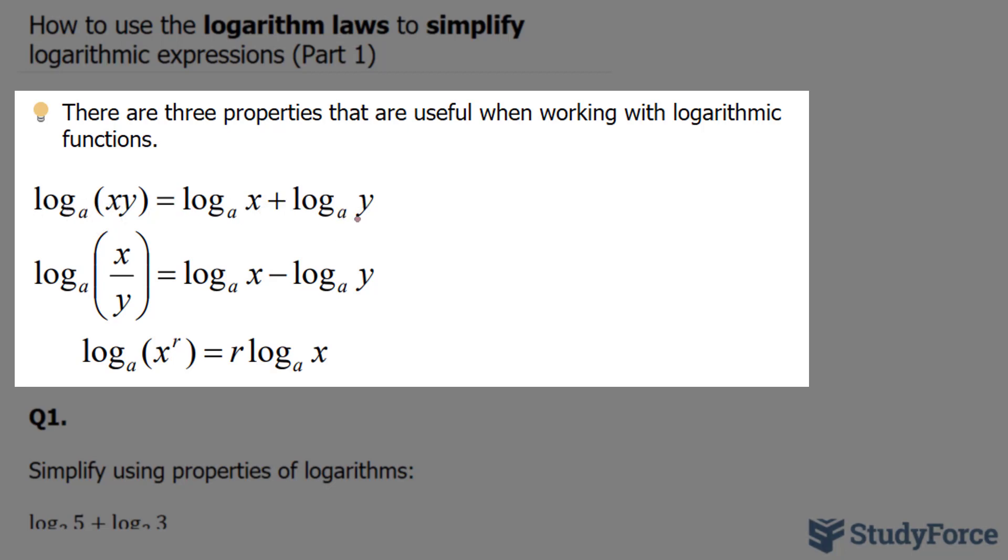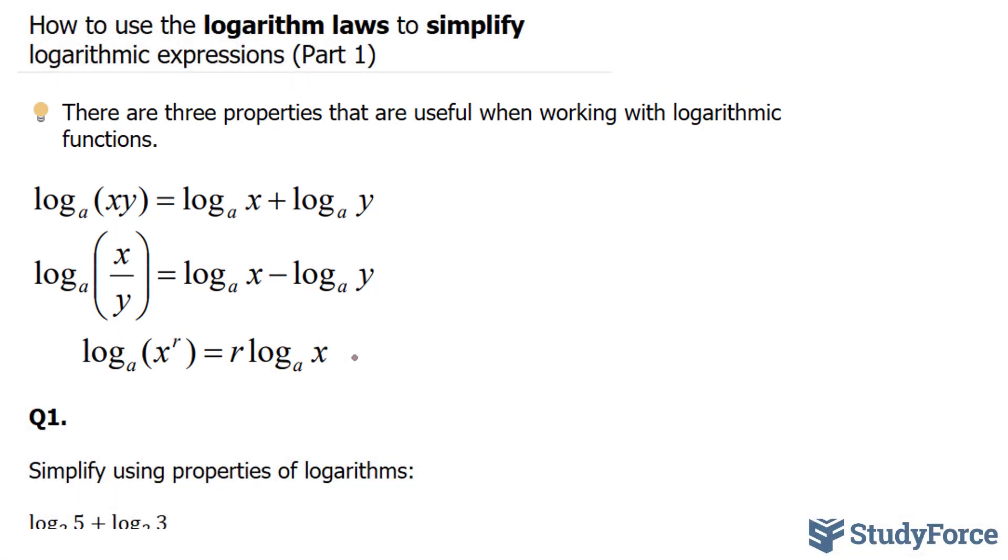The first one is called the product rule, the second one is called the quotient rule, and the last one is called the power rule. We'll refer back to these as we simplify expressions.